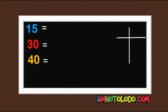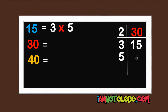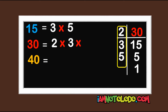So let's start with 15. 3 in 15 is 5, 3 cannot divide 5 so we use 5. 5 in 5 is 1. So this becomes 3 times 5. For 30: 2 in 30 is 15, 3 in 15 is 5, 5 in 5 is 1. So let's write this: 2 times 3 times 5.